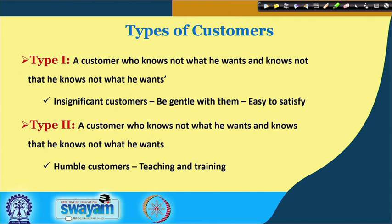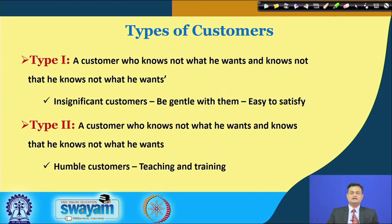There are different types of customers. Type 1 is a customer who knows not what he wants and knows not that he knows not what he wants. These are somewhat insignificant customers — we need to be gentle with them. They are easy to satisfy because they have confusion. If we help them understand their requirement as well as the offerings of the product, this kind of customer can easily be convinced.